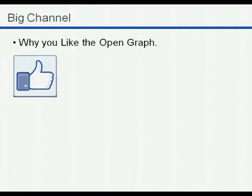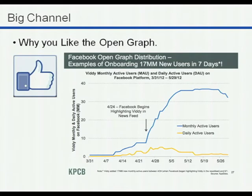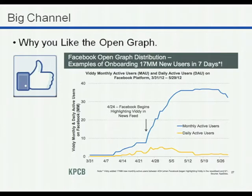Names, faces, and friends — made possible by the Open Graph. Why do you like this? First, it's a big channel — a tremendous source of referral traffic. This is a graphic from Mary Meeker's report showing a site called Viddy onboarding 17 million users in seven days. I'll caveat that they had early mover advantage and Facebook may have prioritized some news feed impressions. But nonetheless, the fact that they can even do that shows there are tremendous referral and channel advantages to the Open Graph. E-commerce products like fab.com have also integrated Open Graph with similar results.